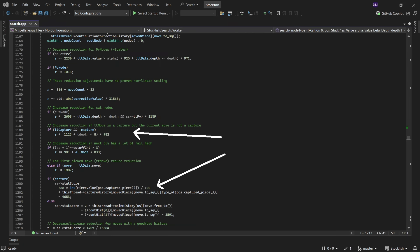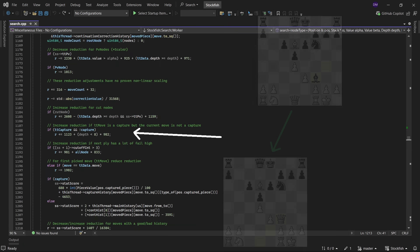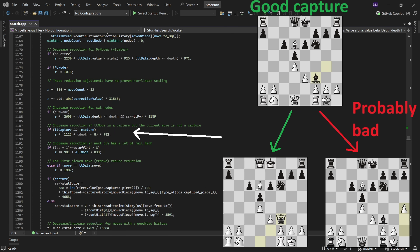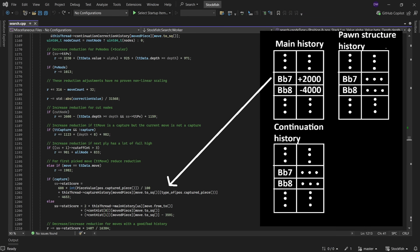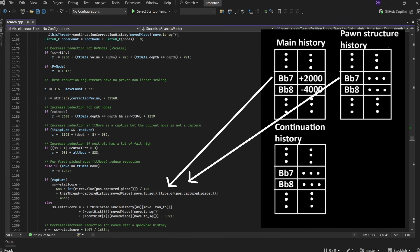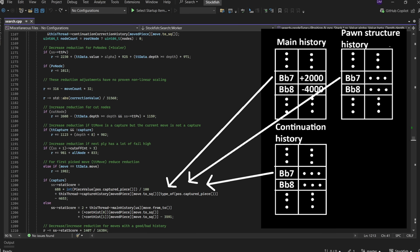My favorite are these two. This one increases the reduction for moves that don't capture a piece when our best move captures a piece, since missing out on a free piece is generally a mistake, and this one increases or decreases the reduction based on running statistics of how good each move has been in similar positions.